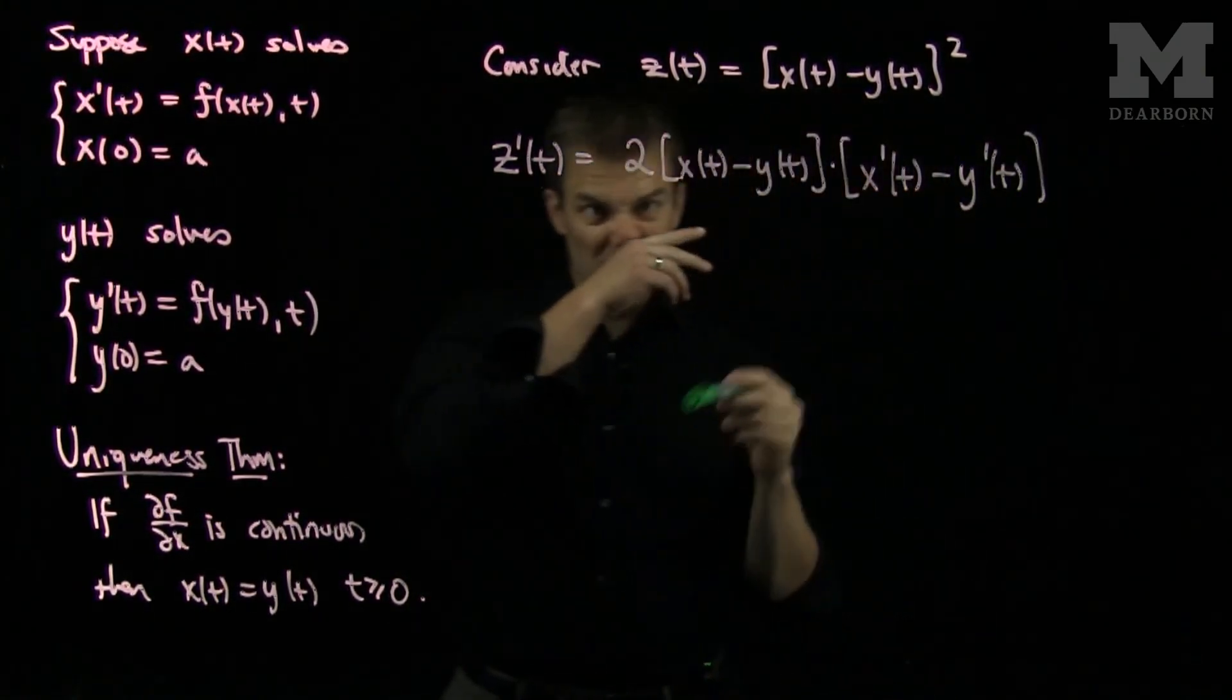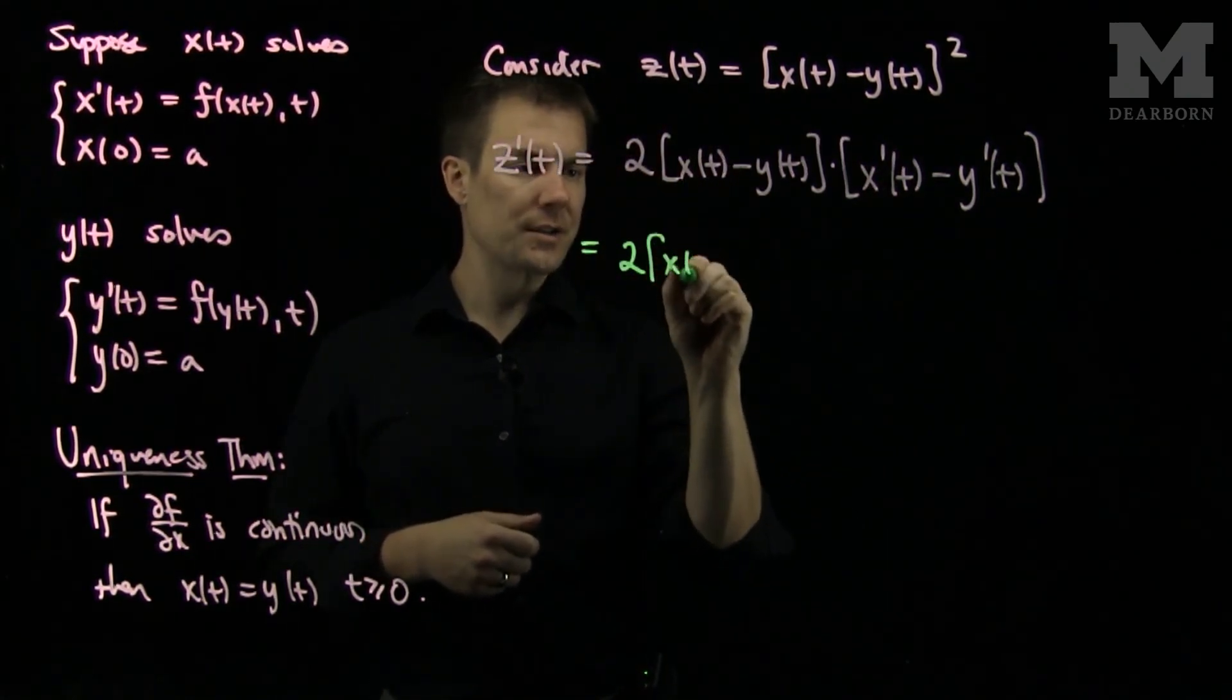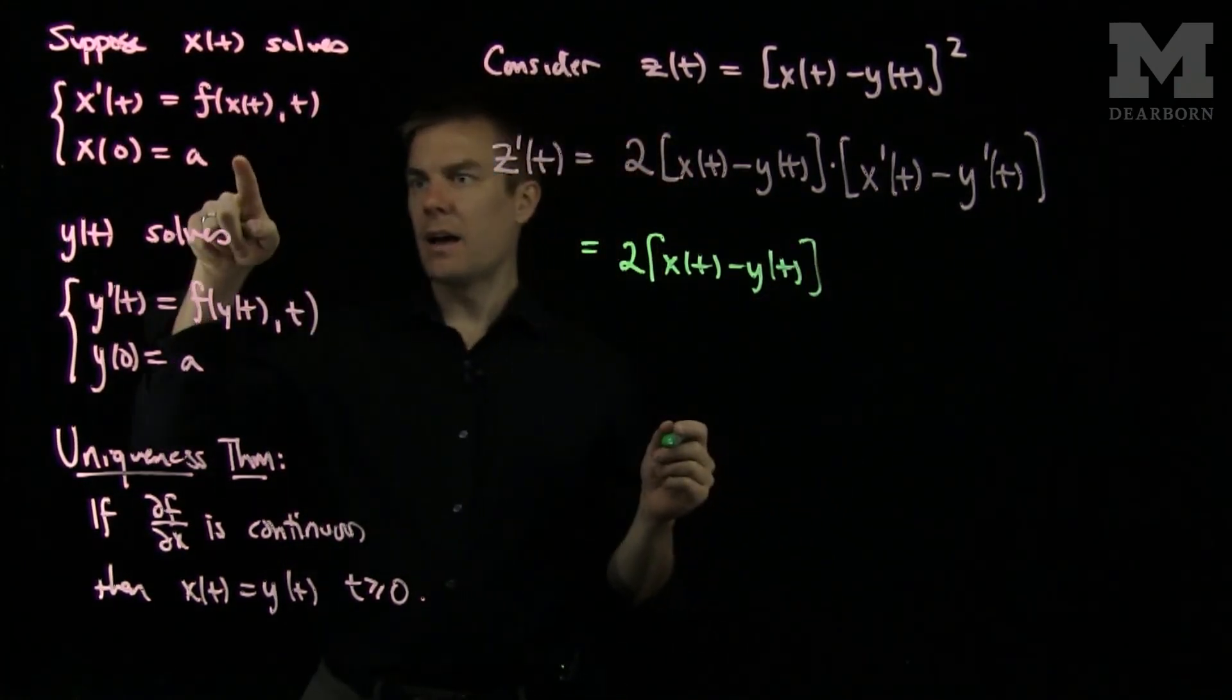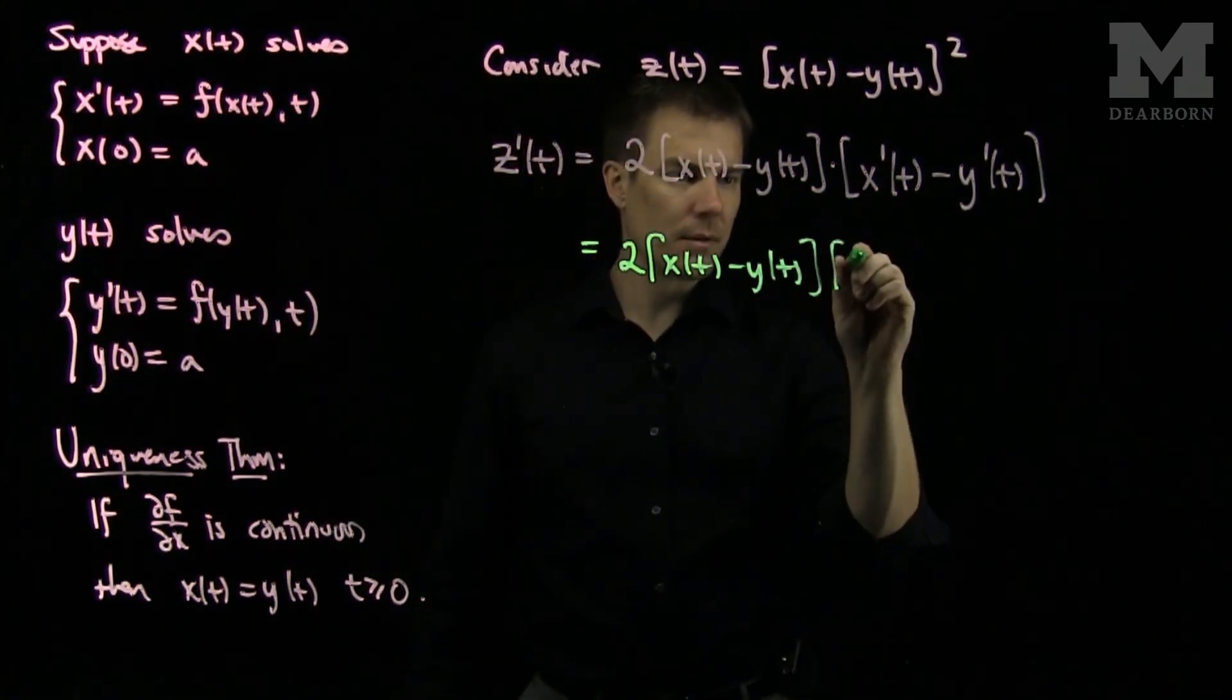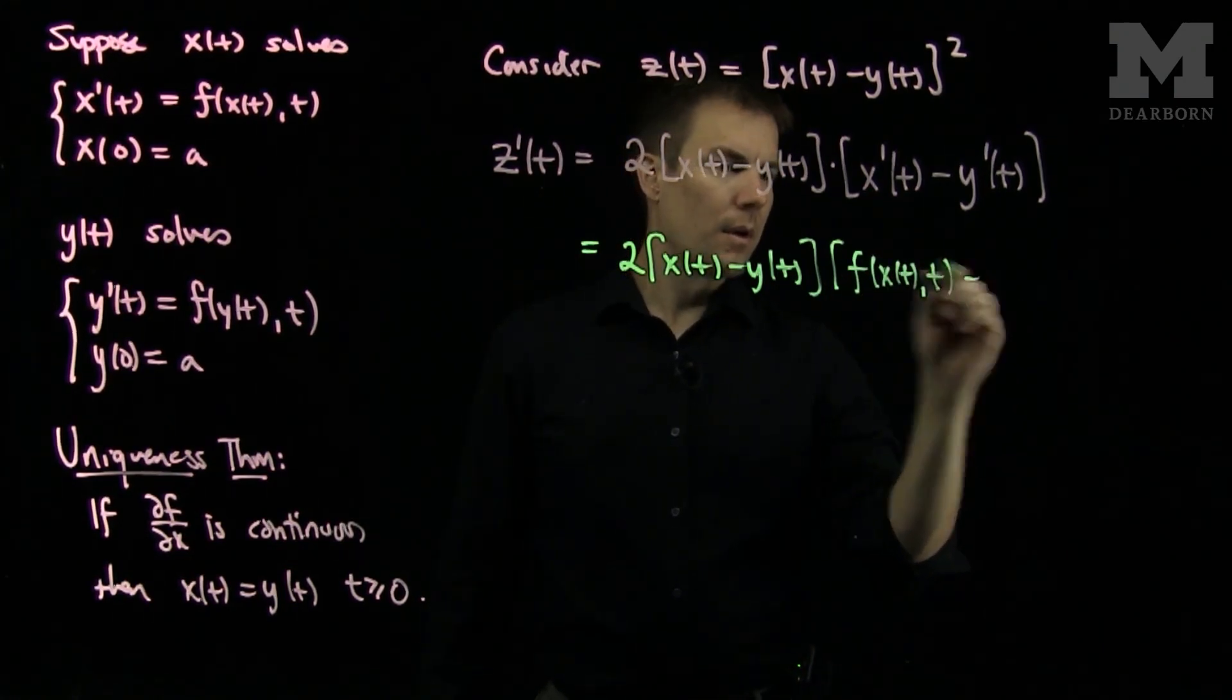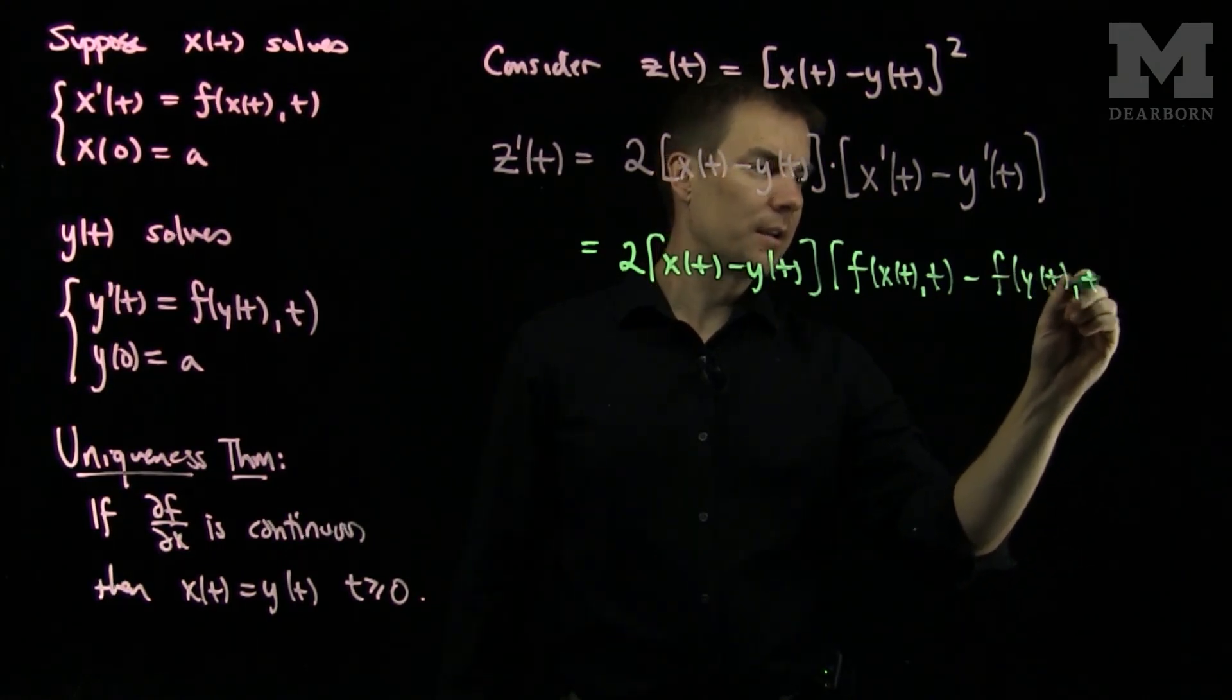Now, we can use the differential equation. This is 2x of t minus y of t, and then I'll have f of x of t minus f of y of t, t.